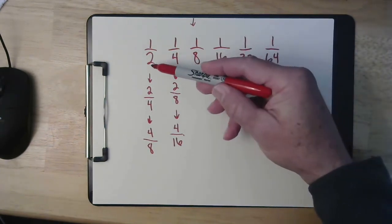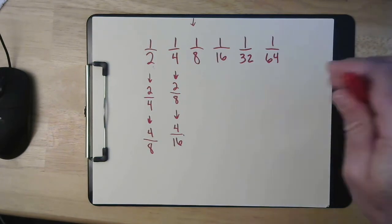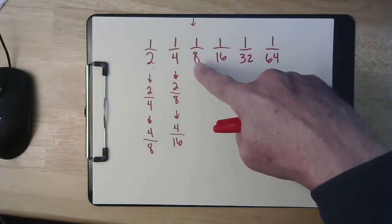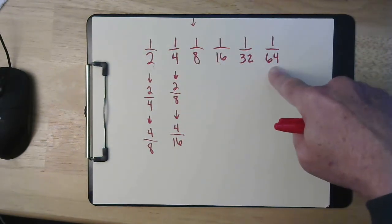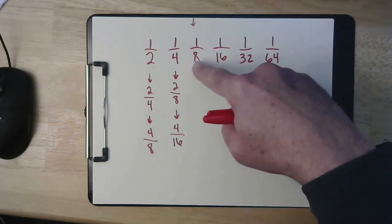You're going to work with bottom numbers 2, 4, 8, 16, 32, 64, and each one of them is double the last one. Or if you're going the other direction, each one as you go down this way is half the previous one.